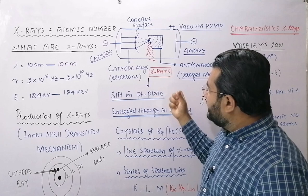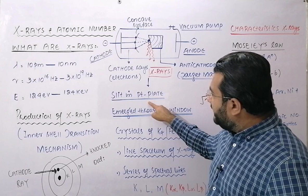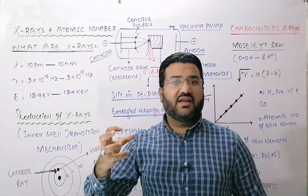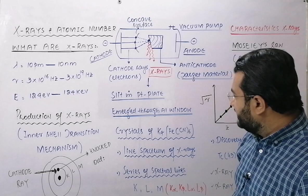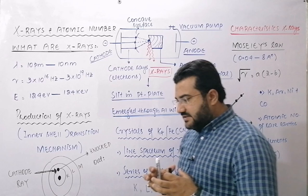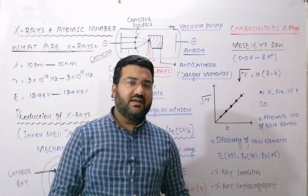X-rays are produced in all directions, but only a few wavelengths are useful. They are passed through a slit in a platinum plate and emerge through an aluminium window, which extracts the desired wavelengths. That desired wavelength is then made to fall on crystals of potassium ferrocyanide K₄Fe(CN)₆, which diffracts the X-rays, and a diffraction pattern is recorded on a photographic plate — this is called the line spectrum of X-rays.